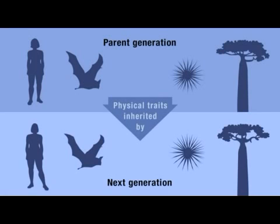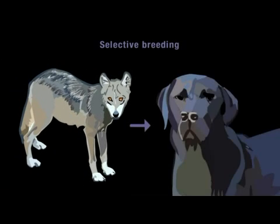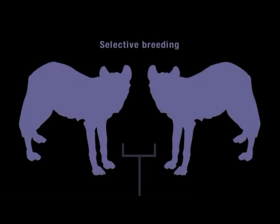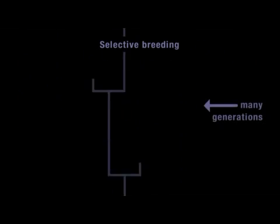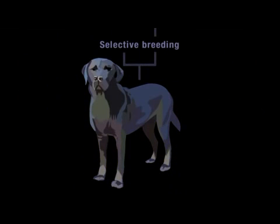To start with some well-known facts, we know that physical traits of parent lifeforms are inherited by the next generation, and that through the artificial process of selective breeding, many traits can be exaggerated in later generations. This can be achieved fairly simply by mating together individuals that exhibit those traits most strongly, and repeating this process with successive generations.